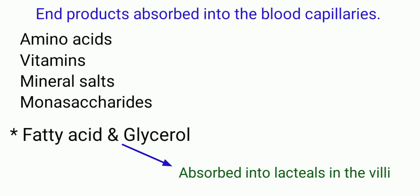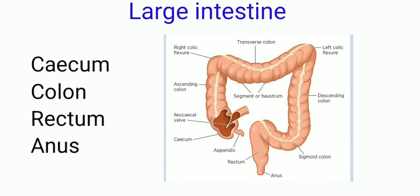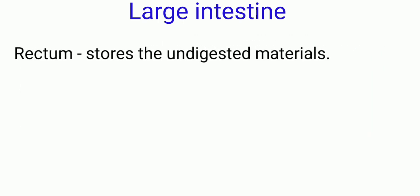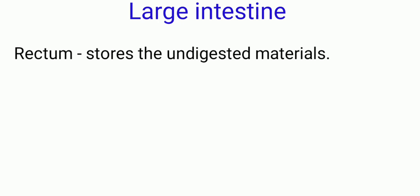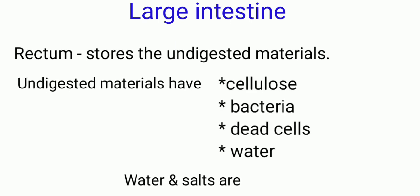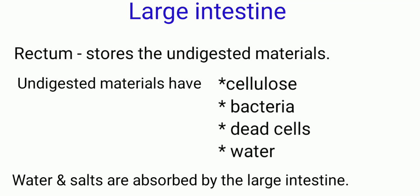The unabsorbed materials are sent to the large intestine. The large intestine consists of the caecum, colon, rectum, and anus. The dilated part is the rectum, where undigested materials are temporarily stored until defecation. The large intestine receives undigested materials which contain cellulose, bacteria, dead cells, and water. These materials remain in the colon, where most of the water and salts are absorbed. The semi-solid material called faecal matter or faeces is lubricated by mucus and ejected from the body via the rectum and through the anus.